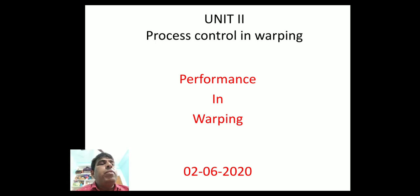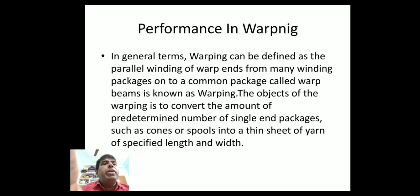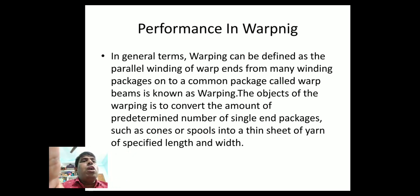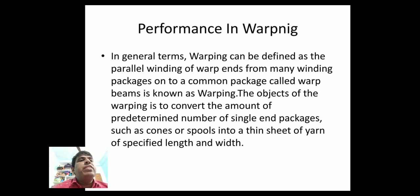Performance in warping is the next topic. In general terms, warping can be defined as a parallel winding of warp ends from many winding packages onto a common package called warp beams. The object of warping is to convert a predetermined number of singular packages such as cones or spools into a thin sheet of yarn of specified length and width.